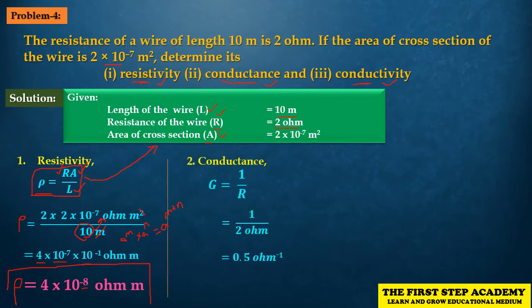Second, conductance. Conductance is the reciprocal of resistance. So the formula is G = 1 / R, where G is conductance and R is resistance.